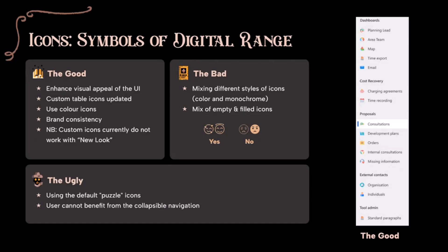Moving on to icons. Icons play a vital role in the visual appeal of the app UI. Create a good user experience by updating custom table icons — and not everyone knows this, but you can also use color icons in model-driven apps. However, be mindful of your selection, as mixing different styles such as color, monochrome, or empty and filled icons can create an inconsistent and disjointed appearance. I find the default puzzle icons quite ugly — if you leave them in, users cannot benefit from collapsible navigation as they won't be able to differentiate tables by their unique icons.